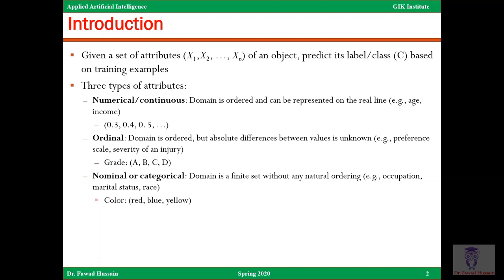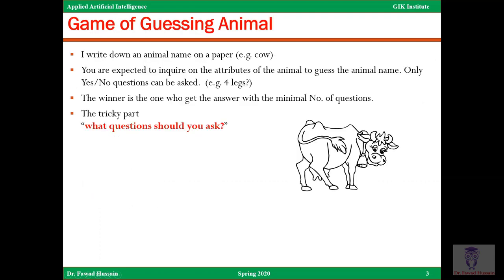So one type of attribute is the numerical or continuous attribute, the second is the ordinal attribute, and the third type is the nominal or categorical attribute. In this case, the domain is a finite set without any natural ordering — for instance, occupation, marital status, race, or color. Red, blue, yellow, green, black are all categorical. You cannot have red 0.5 or red 0.23. And when we say ordered, it means 0.4 is greater than 0.3, or grade A is greater than B, but you cannot say red is greater than blue.